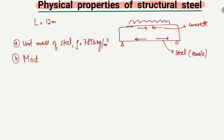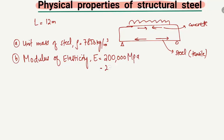The second physical property of steel is the modulus of elasticity. The modulus of elasticity of steel is 200,000 megapascals, or equivalently 200 gigapascals. These are the standard properties of structural steel.